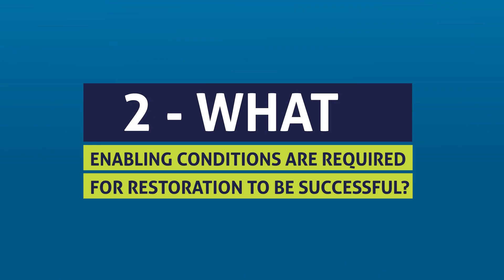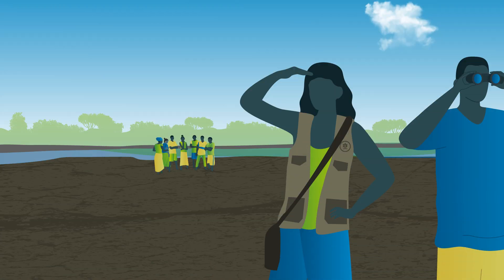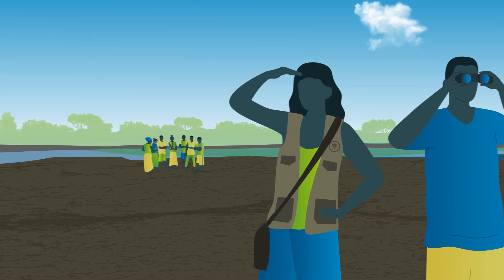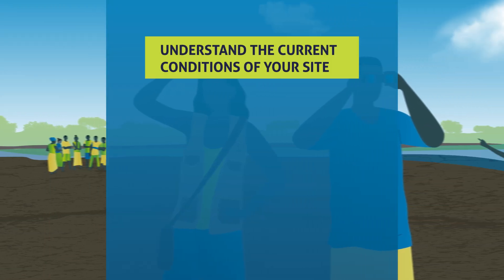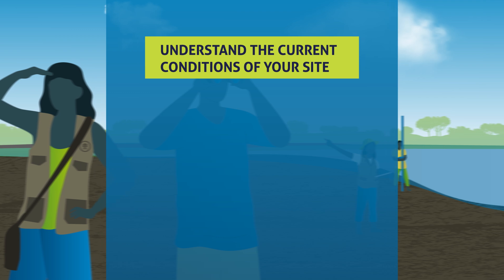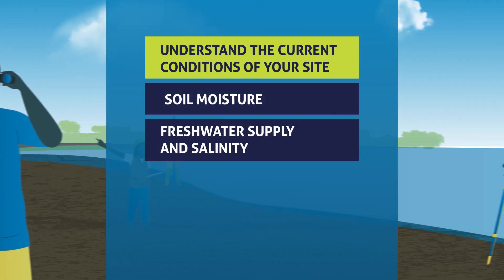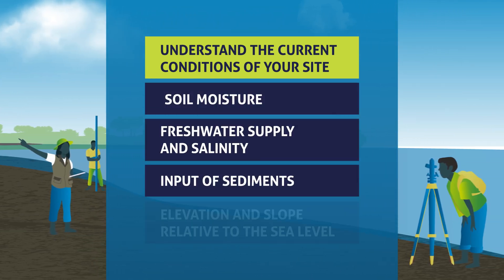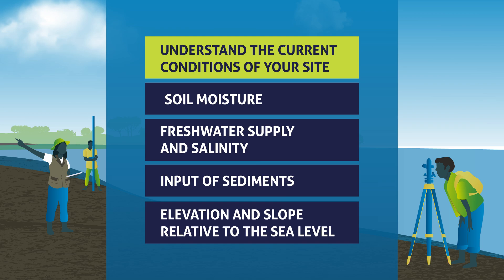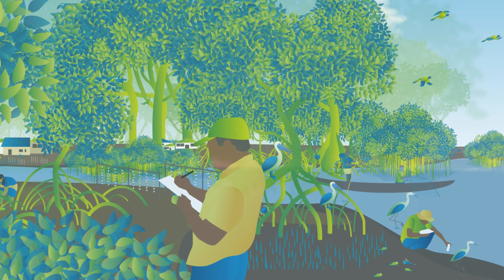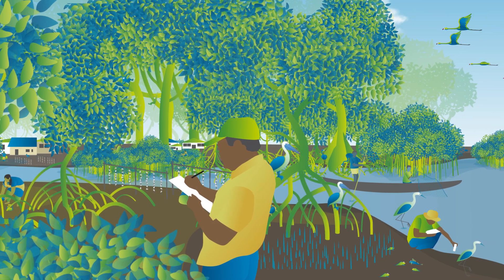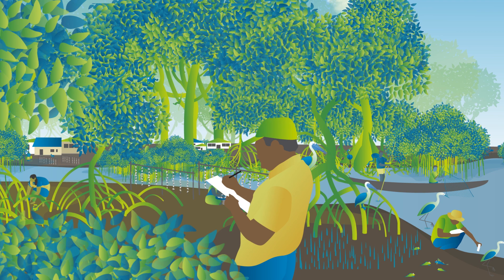Secondly, what enabling conditions are required for restoration to be successful? To identify required interventions, you need to understand the current conditions of your site, such as soil moisture, freshwater supply, salinity, input of sediments, and elevation and slope relative to sea level. Study a nearby healthy site as a reference to guide you.